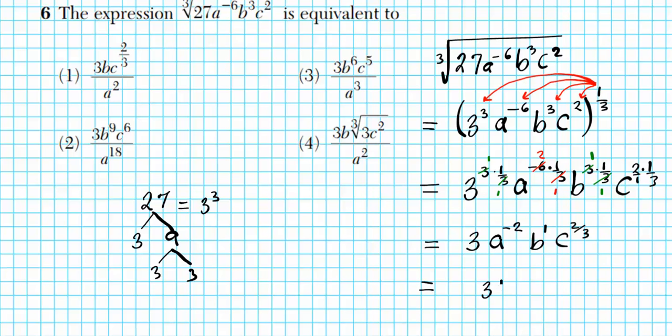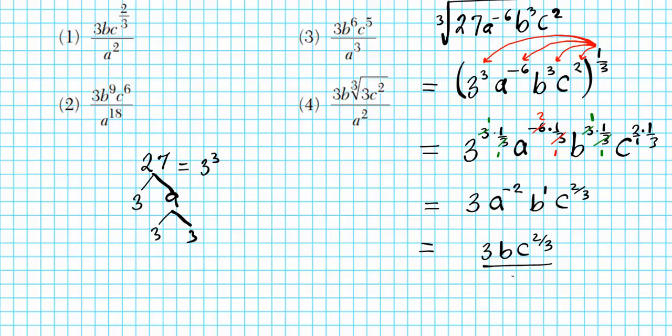So we have 3bc to the 2 thirds over... Now, what happens is that if a term has a negative exponent, you switch the position of that term either to the numerator or the denominator depending on where it was initially. Since a is in the numerator, it switches to the denominator. And when you do that switch, what happens is that you invert or you reverse the sign. So since this is negative, it now becomes positive. So let's look at our options. 3bc to the 2 thirds over a squared. Answer is option number one.